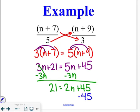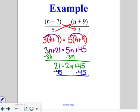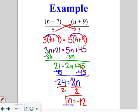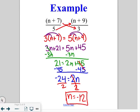Leaving us with 21 is equal to 2n plus 45. Continuing to solve, we're going to take 45 away from both sides of the equation, which leaves us with negative 24 is equal to 2n. And finishing it out by dividing both sides of the equation by 2.